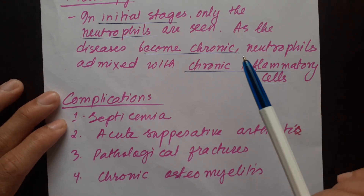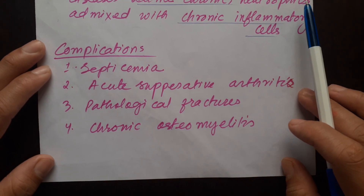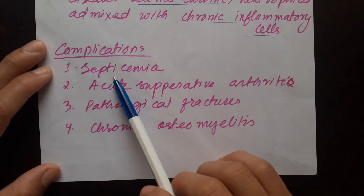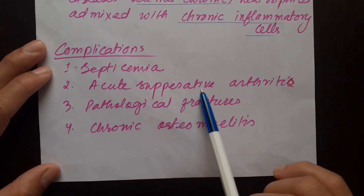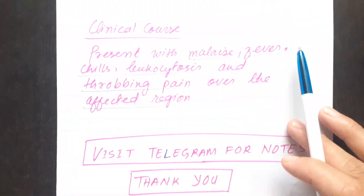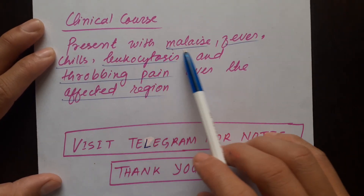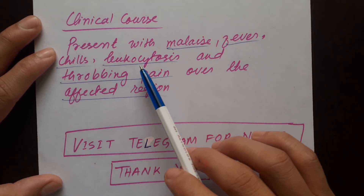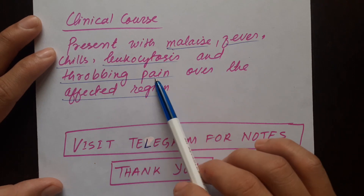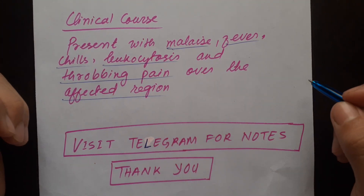Now let's see complications: septicemia, acute suppurative arthritis, pathological fractures, and chronic osteomyelitis. Clinical course: presents with malaise, fever, chills, leukocytosis, and throbbing pain over the affected region. That's all for today, thank you everyone for watching.